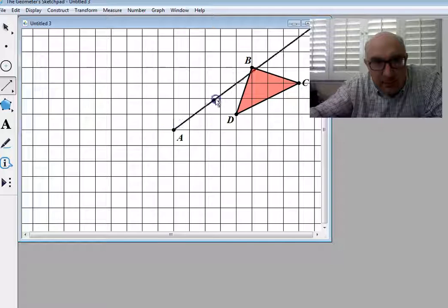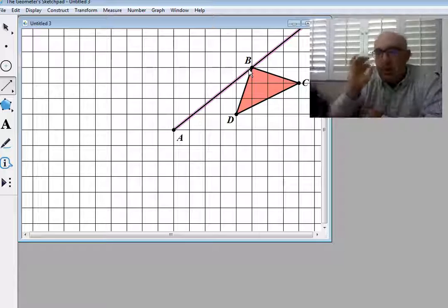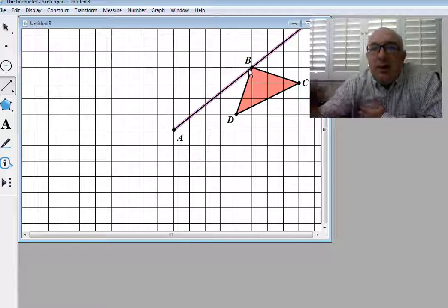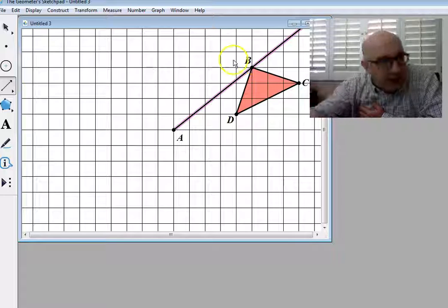When we dilate something, we expect it to expand or contract along that ray. What a negative does is actually make it go in the opposite direction.